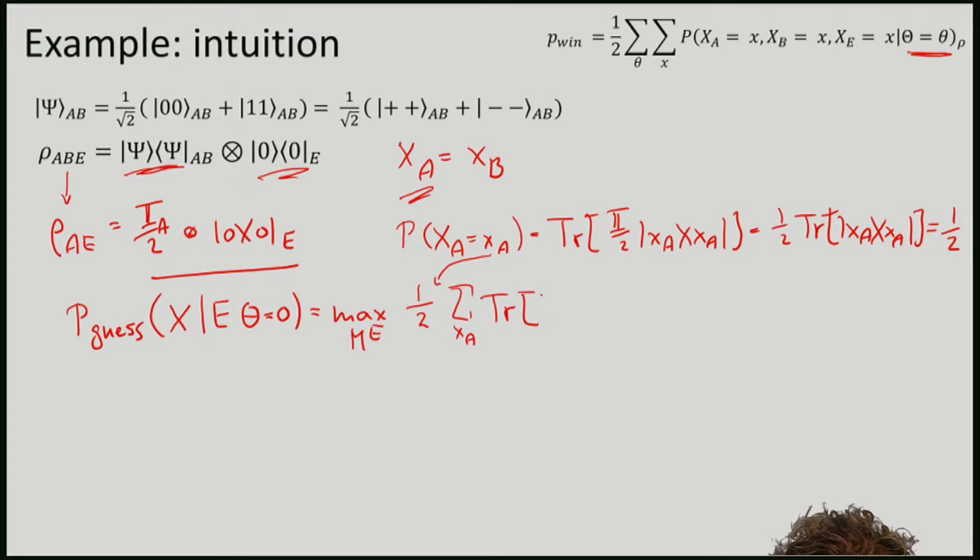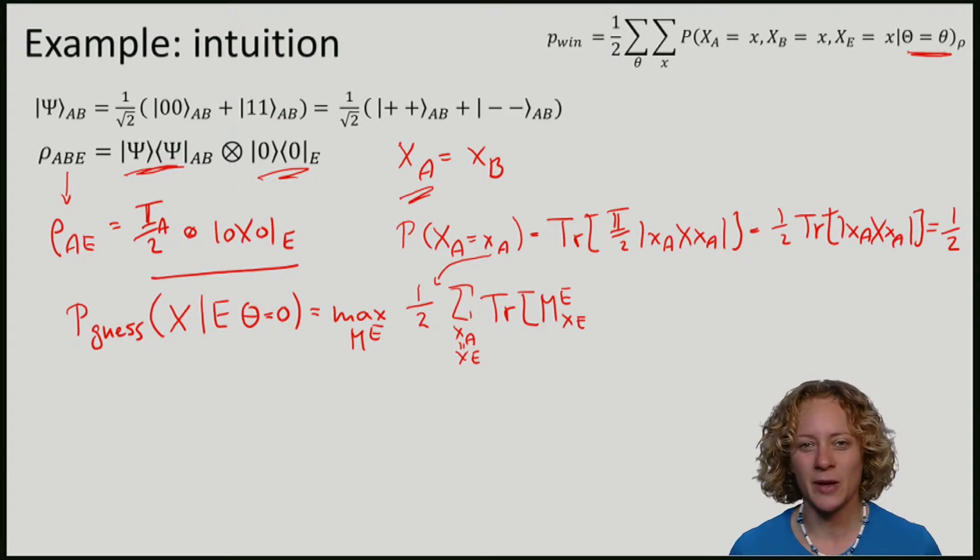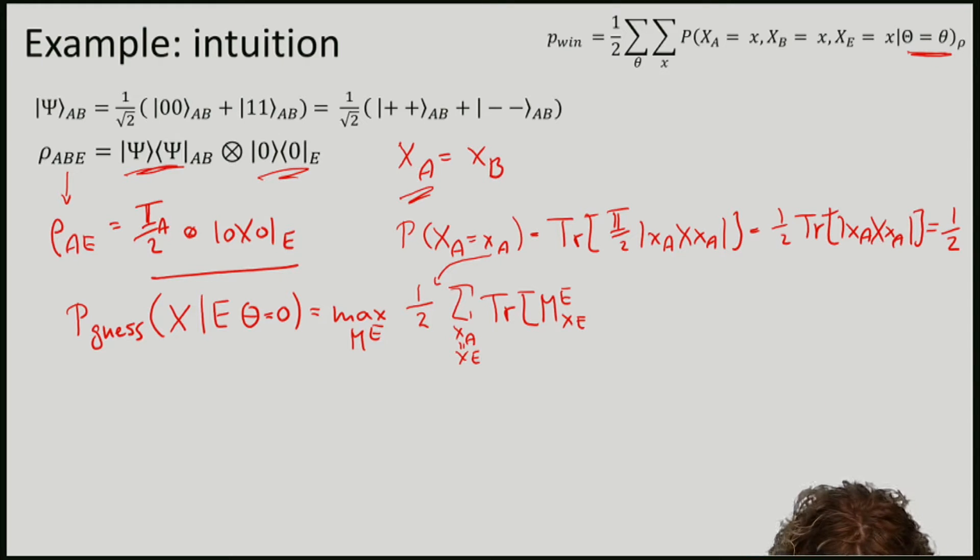We perform a measurement that has outcomes, a guess, namely the guess xe, on the state that Eve holds, depending on x. So note that this state will always be the same here. So here I have just zero on E.